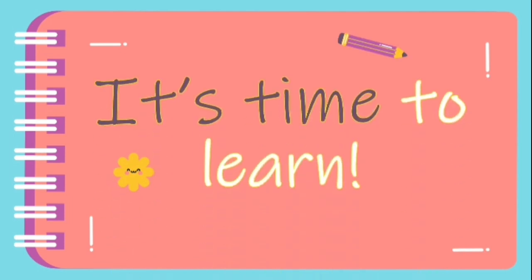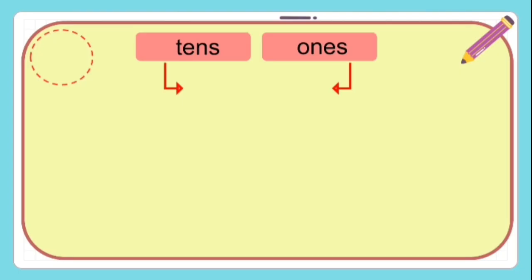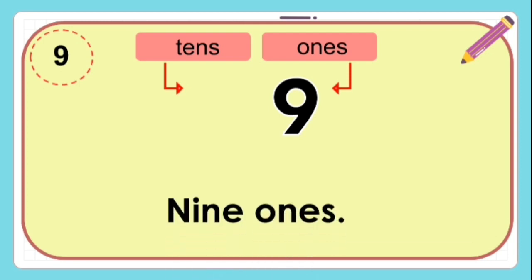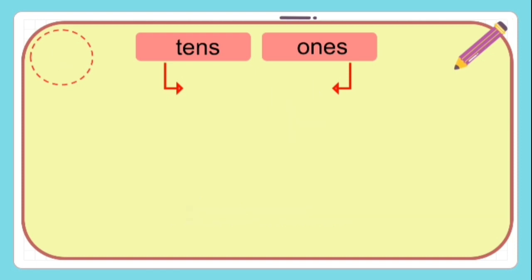Are you ready? It's time to learn. Example: we have number 9. Nine is in the ones place, so nine is equal to nine ones. Number 16: one is in the tens place.